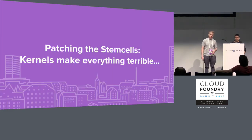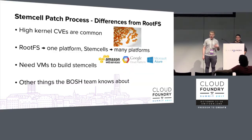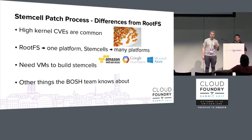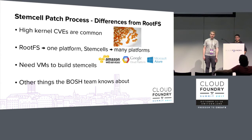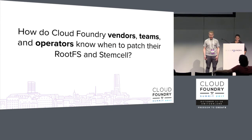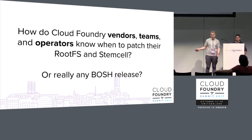I'll talk about stem cells briefly too — that's a different team. The stem cell patch process is similar; they use a pipeline that automates parts of it. High kernel CVEs are really common, and those don't affect the rootFS because there's no kernel to deal with, but they do affect stem cells, resulting in a lot of stem cell rebuilds that have to happen very quickly. Stem cells need to work on a whole bunch of different platforms, and you have to build them on VMs, which is slower. So how do Cloud Foundry vendors, teams, and operators know when to patch the rootFS and stem cells — and more generally, how do they know when to patch anything if there's a security vulnerability?